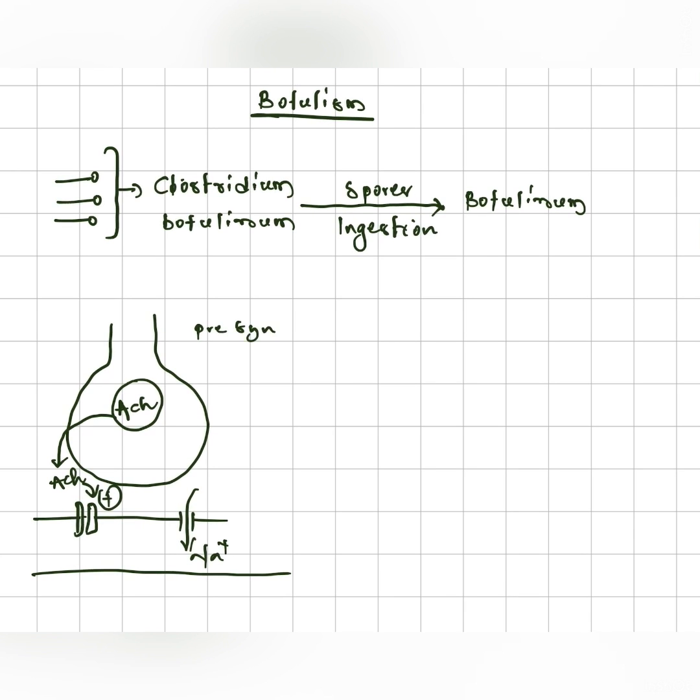The upper part is called the presynaptic terminal, while the lower part is the muscle, and the junction between these two is the neuromuscular junction.